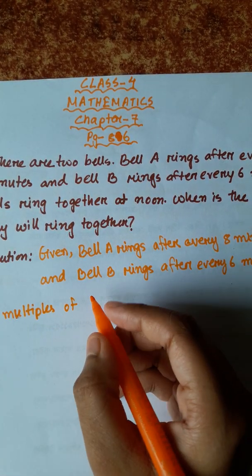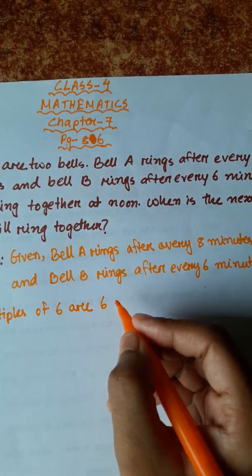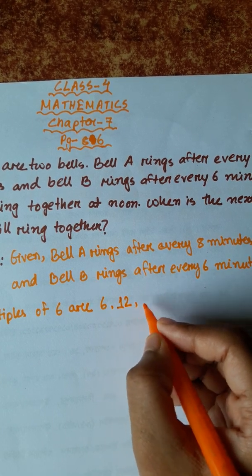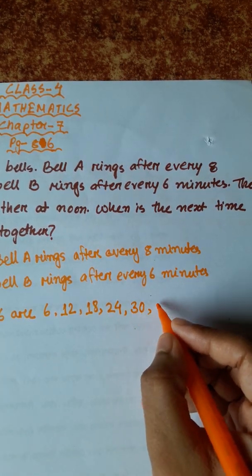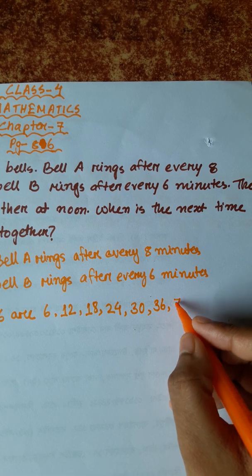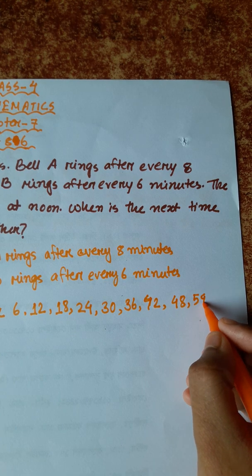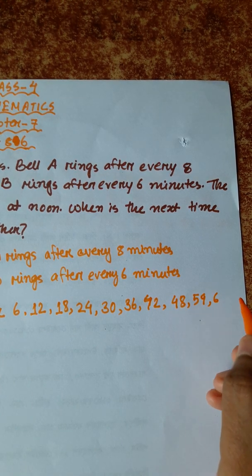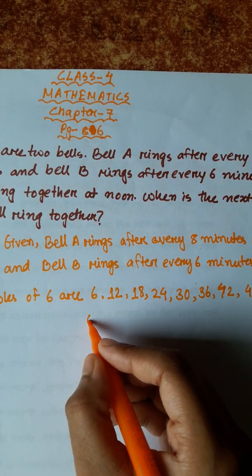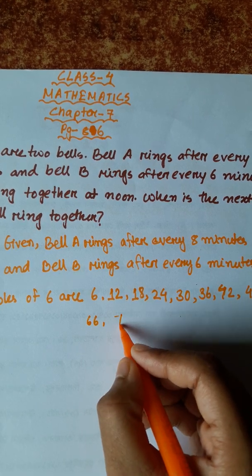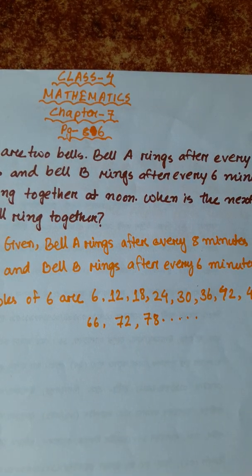Multiples of 6 are: 6×1=6, 6×2=12, 6×3=18, 6×4=24, 6×5=30, 6×6=36, 6×7=42, 6×8=48, 6×9=54, 6×10=60, 6×11=66, 6×12=72, 6×13=78, and more.